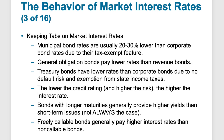If a single project fails, that may affect returns on revenue bonds, whereas general obligation bonds have the entire government behind them. Treasury bonds have lower rates than corporate bonds for two big reasons: there's no default risk for U.S. Treasuries, and they're exempt from state income taxes. The lower the credit rating, the higher the risk, and the higher the interest rate, because interest rates are meant to cover risk as well as inflation.